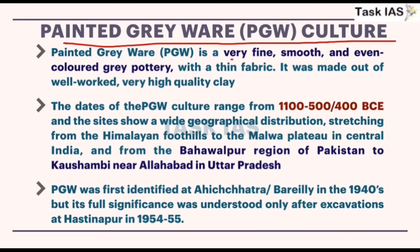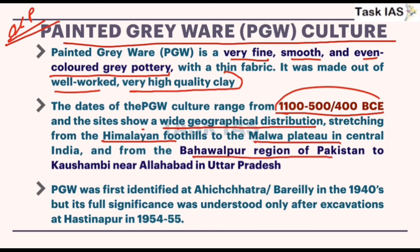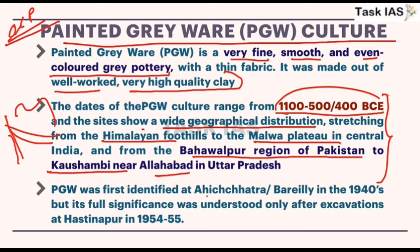The people of this culture were forced to move from the upper Ganga basin and later to the middle Ganga valley under adverse circumstances. Painted Grey Ware (PGW) culture is a very fine, smooth, and evenly-colored grey pottery that is the successor of OCP. It was made from well-worked, very high-quality clay. The dates of PGW culture range from 1100 to 500/400 BCE, and it shows wide geographical distribution — from the Himalayan foothills to the Malva plateau to the Bahawalpur region of Pakistan to Kausambi near Allahabad.